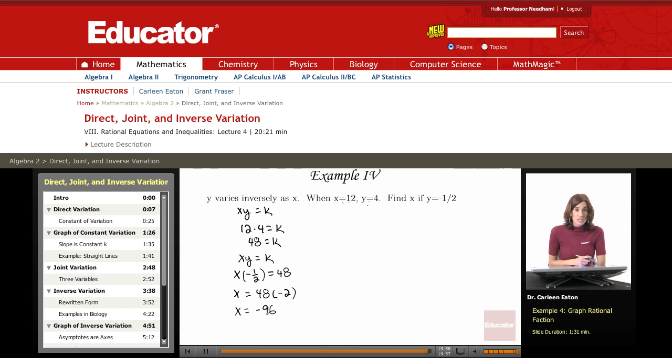So again, this is using the equation for inverse variation, solving for the constant of variation, and then using that constant in the equation with the given value to solve for the unknown variable, which is x.